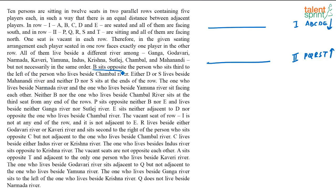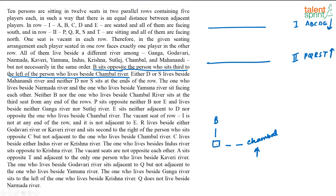B sits opposite to the person who sits third to the left of the person who lives beside Chambal River. Since row 2 faces upwards, left is on this side. So counting third to the left from Chambal gives us a position, and opposite to that is B. It is also given that neither B nor the person who lives beside Chambal River sits at the third seat from any end of the rows. This eliminates both vacant seats being placed on one side, so one vacant seat must go on each end of both rows.